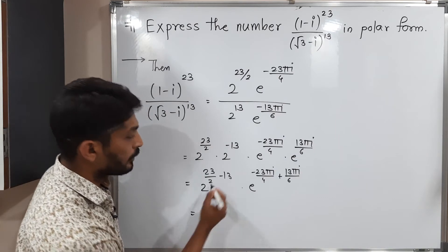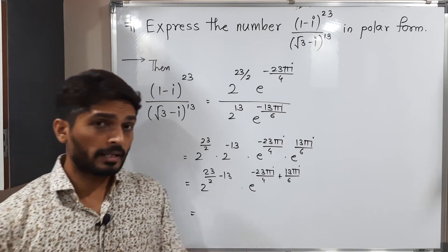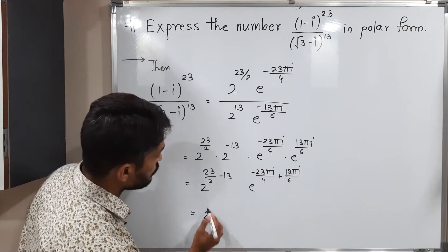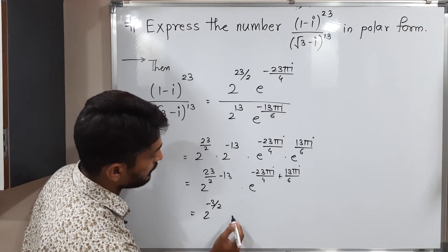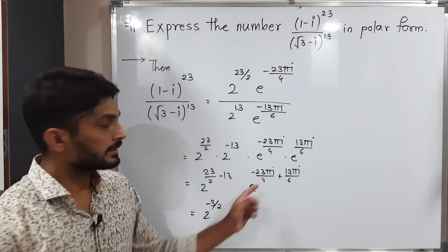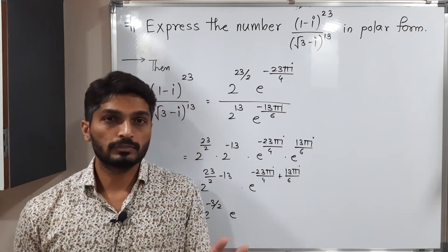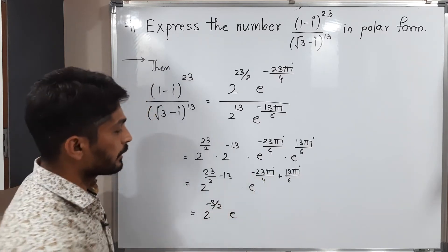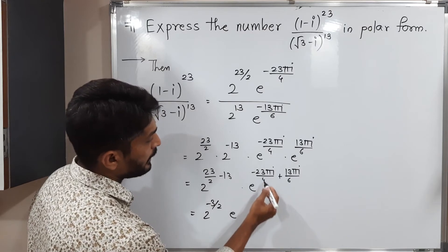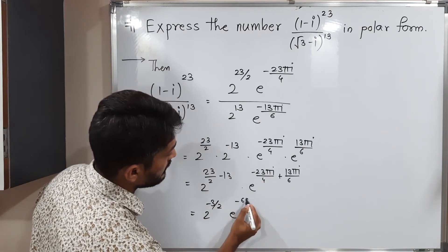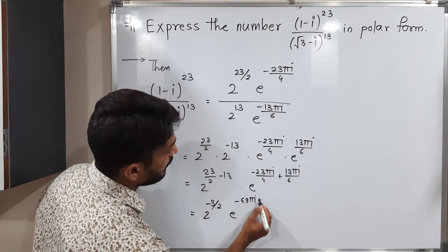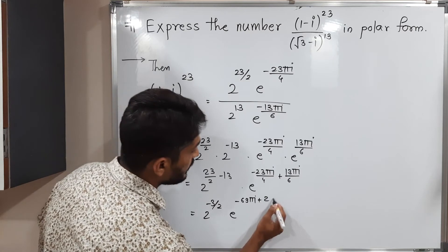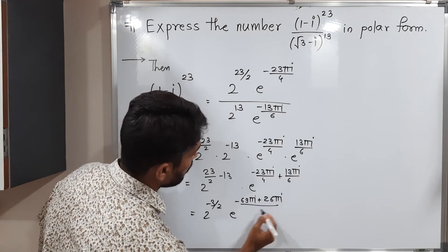Let us simplify further. For the powers of 2: 23 by 2 minus 13 equals 23 minus 26 over 2, which gives minus 3 by 2. For the exponent of e, the denominators are 4 and 6, so the LCM is 12. Multiplying to get denominator 12: minus 23 pi i by 4 becomes minus 69 pi i by 12, and 13 pi i by 6 becomes 26 pi i by 12.